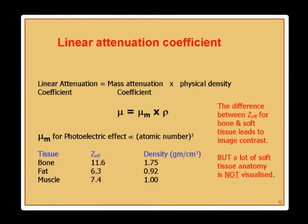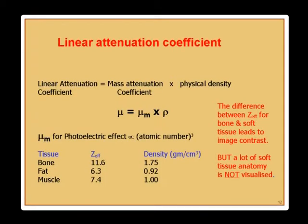The linear attenuation coefficient is the mass attenuation coefficient multiplied by the density. Higher-density material, depending on the mass attenuation coefficient, gives a higher linear coefficient. Looking at mu sub m for tissue, bone, fat, and muscle, you see different numbers. The effective Z for bone versus soft tissue is the basis for tissue contrast. But many times you cannot visualize soft anatomy, so you have to look at different energies.